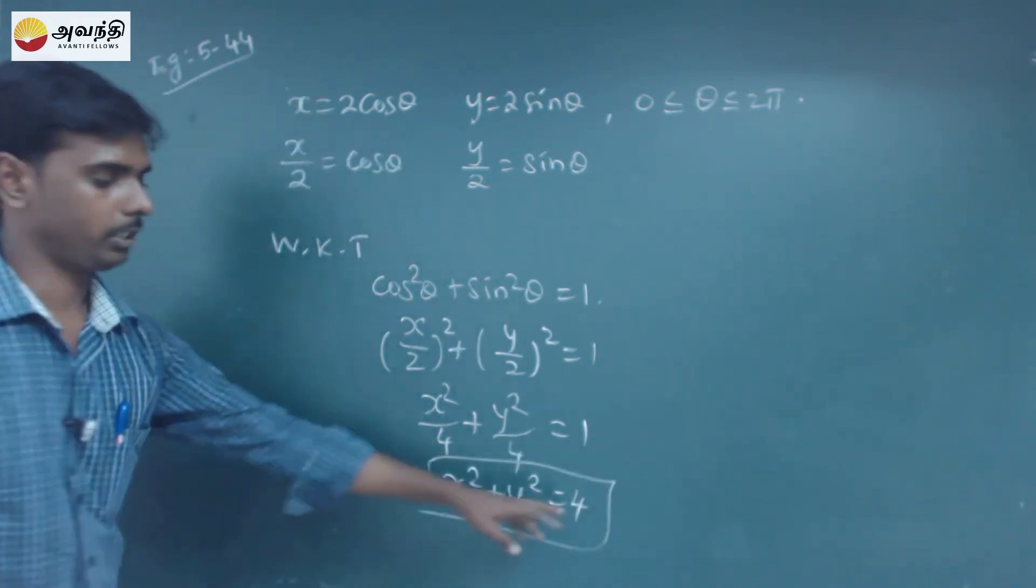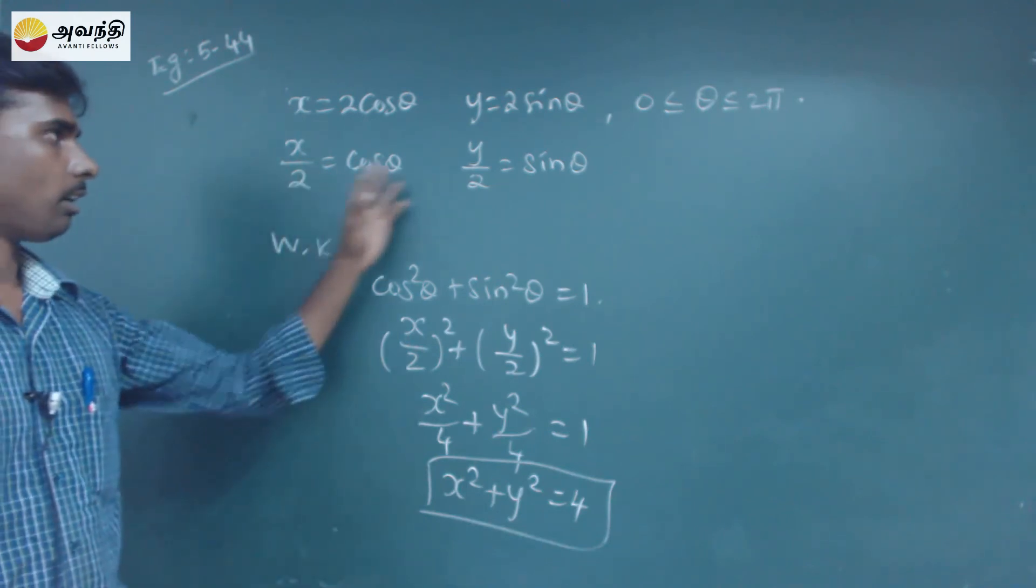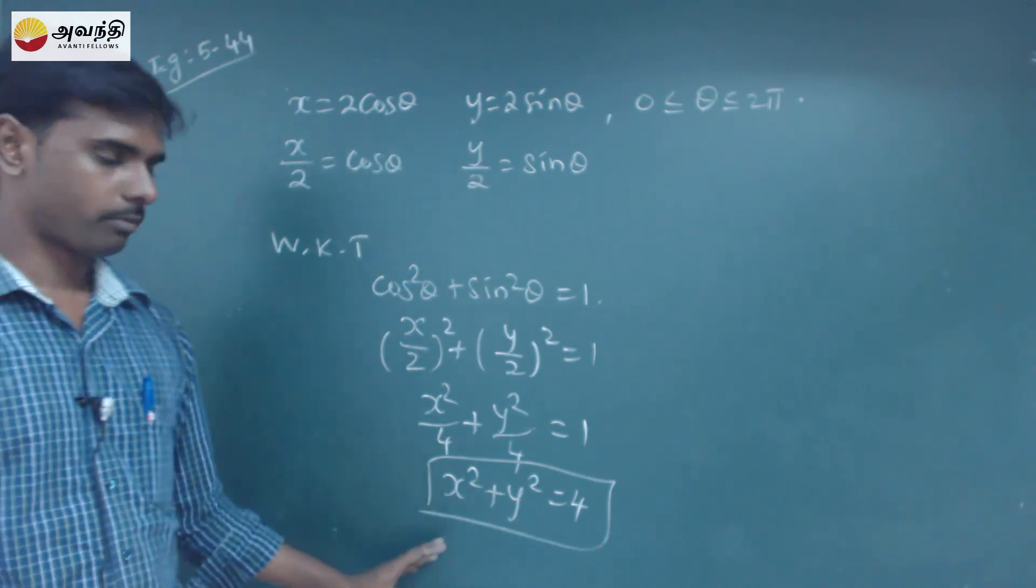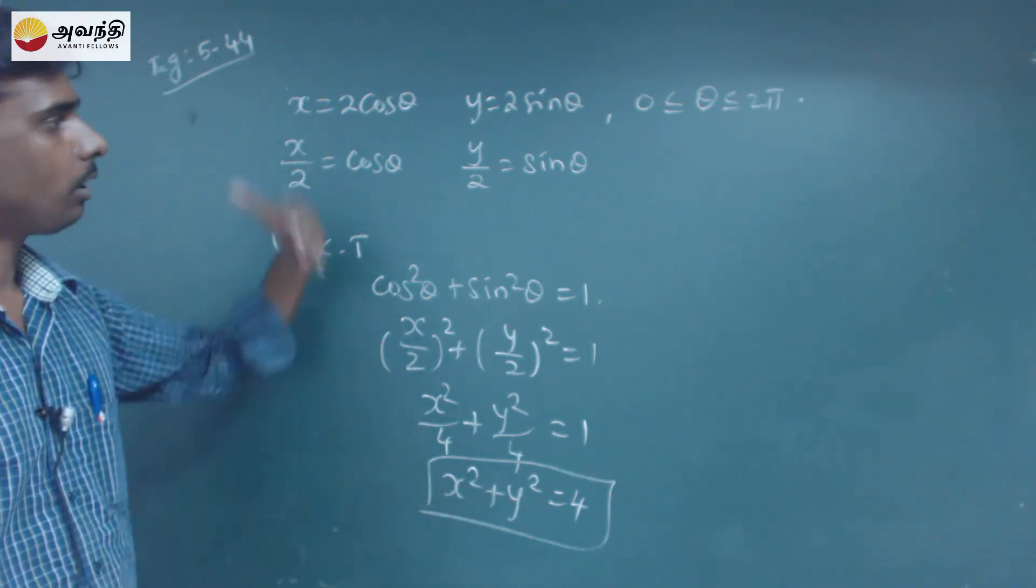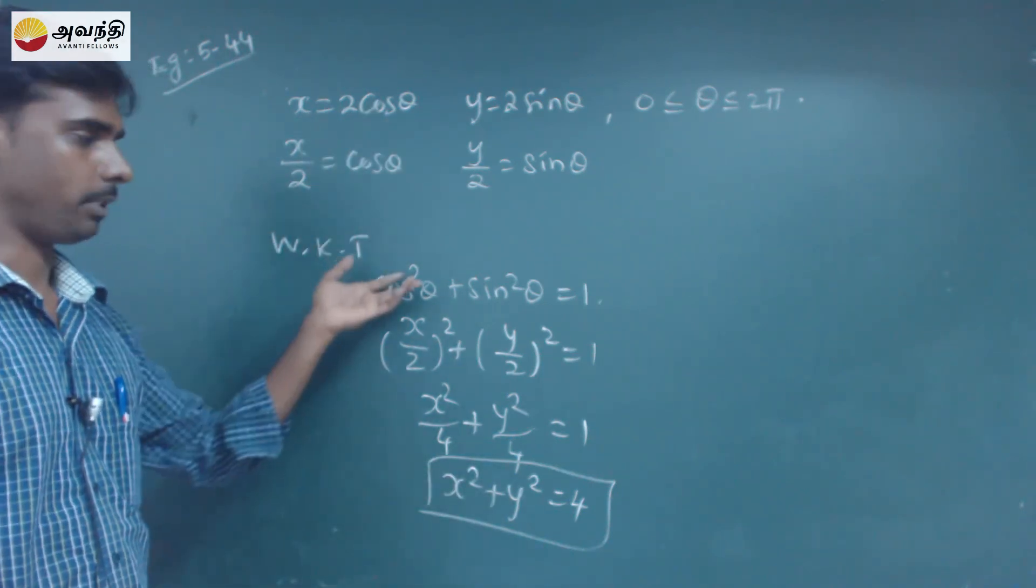So we have to do the parametric equation in the Cartesian formula. So how do we do this? We will change the parametric equation in the Cartesian formula.